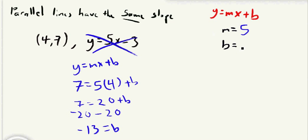So now we know our m, now we know that b is negative 13, and so we can just write our final answer here. So we're going to have y equals 5x. And then we could say plus negative 13, but it's just a little nicer to write minus 13. And there we go, there's our answer.